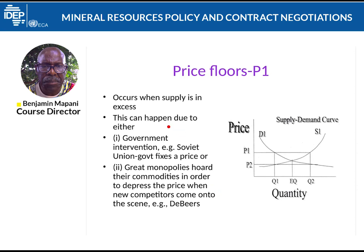Price floors happen when supply is in excess. When there is a lot of material on the market, this pushes the price down. Once supply is very high, the price of the commodity goes down. A good example is tomatoes.